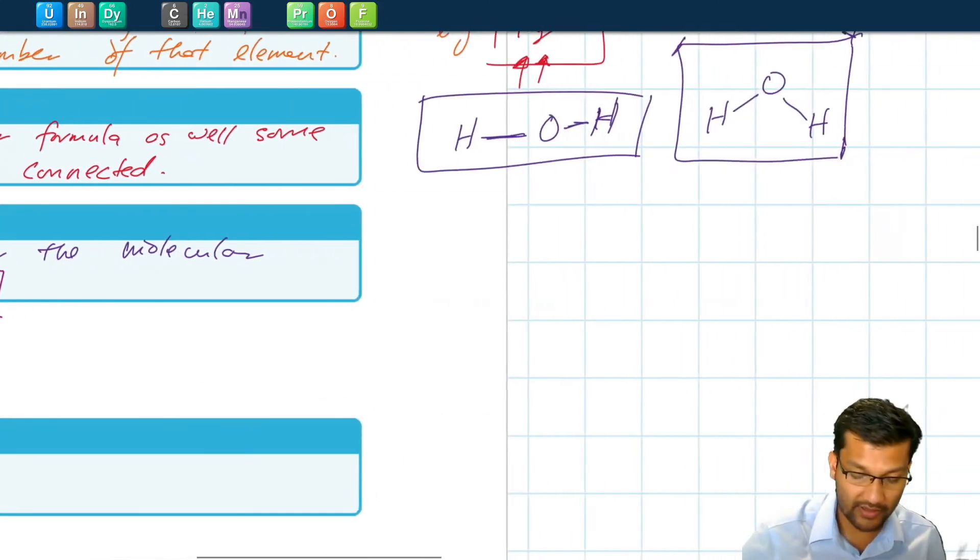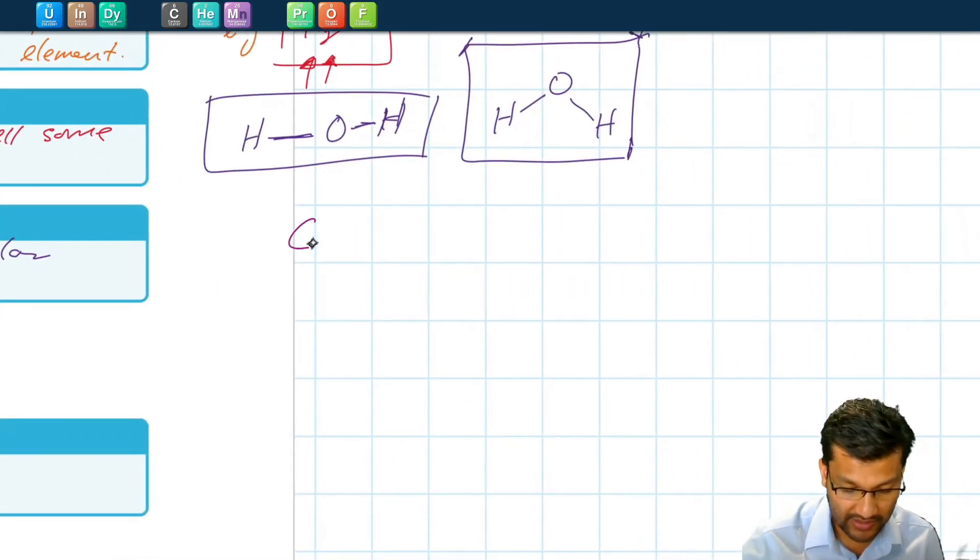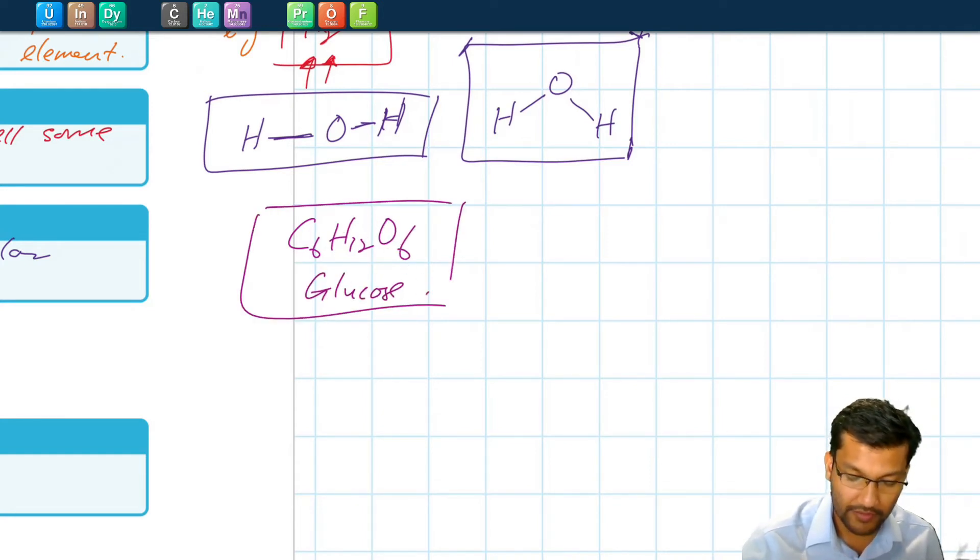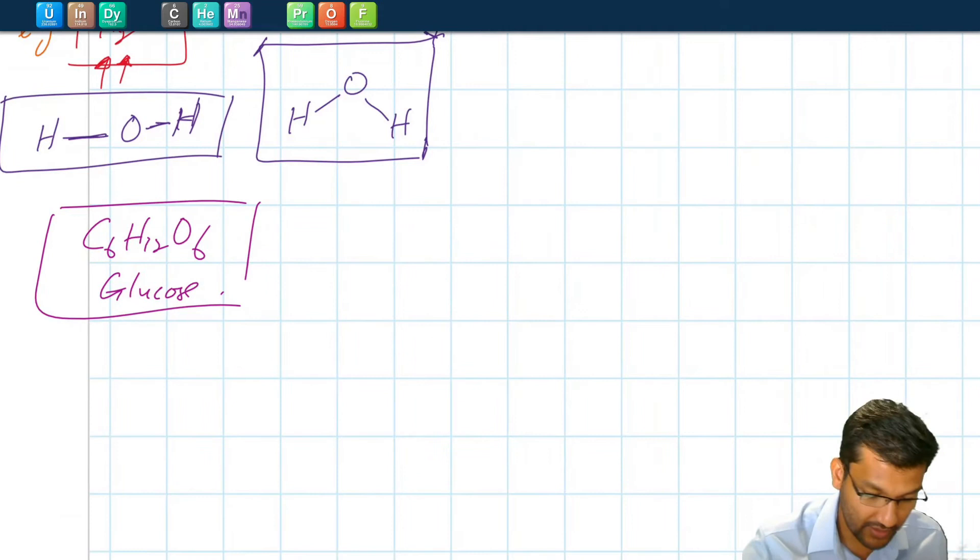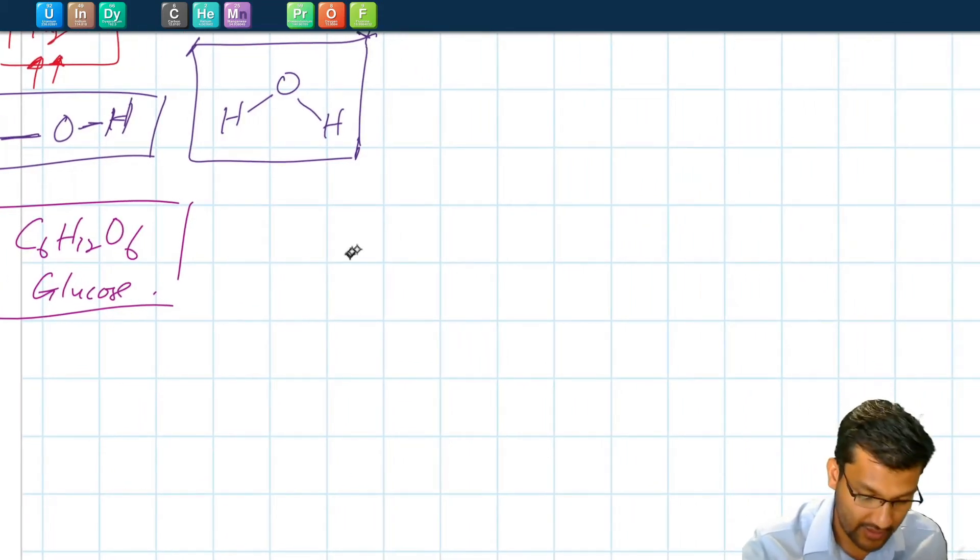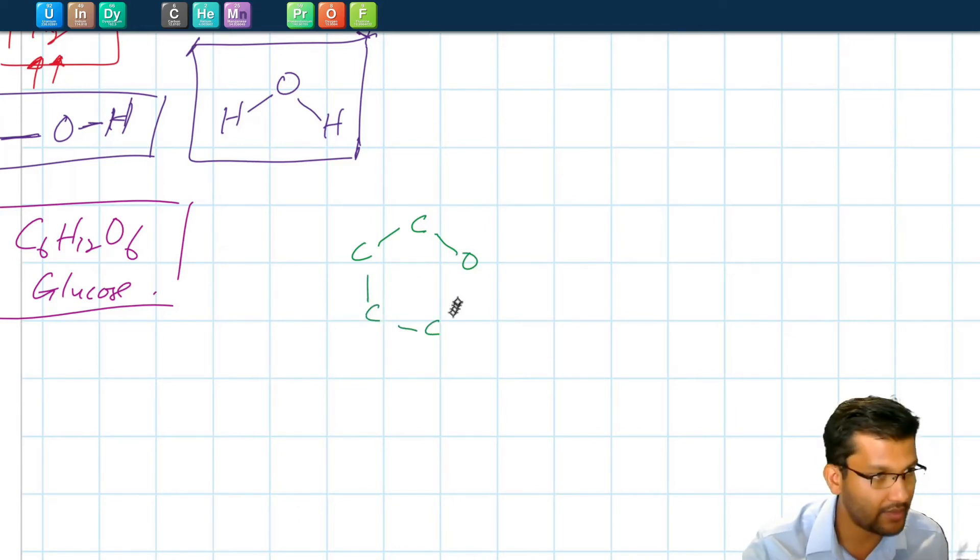So let's look at another example. Sugar C6H12O6, right. This is glucose. This is the molecular formula. The structural formula for glucose looks something like this. It's a carbon atom bonded to a carbon atom bonded to an oxygen. This is going to take a while but I'll fast forward so that you don't have to see it.